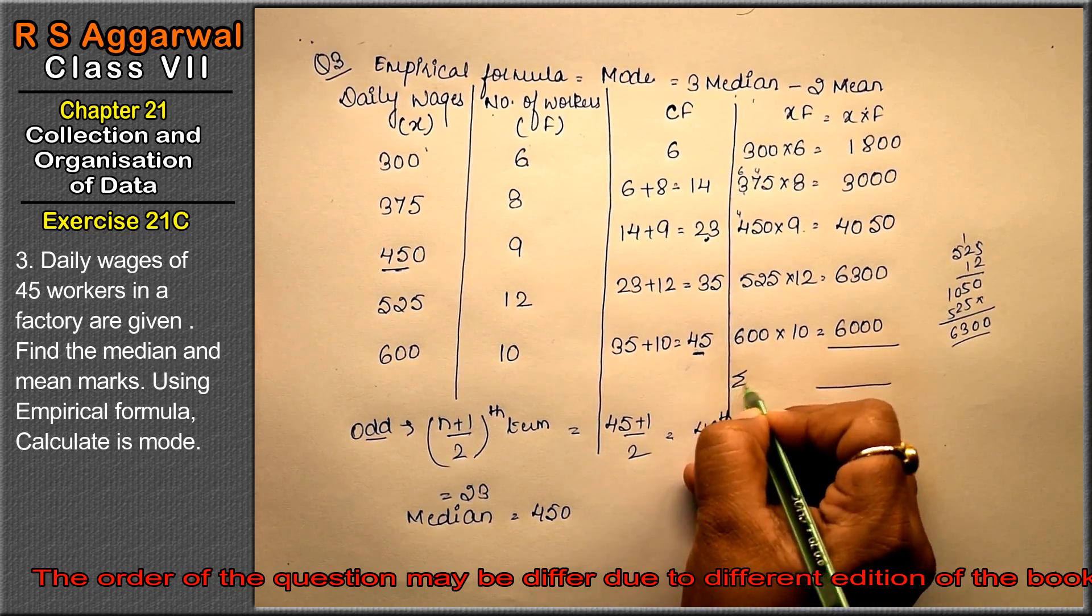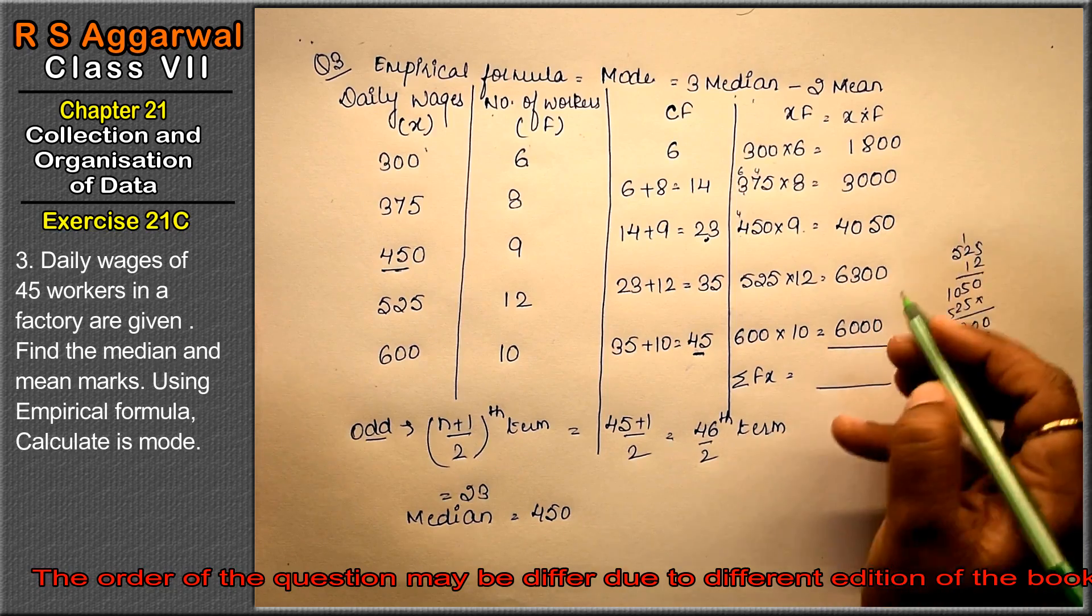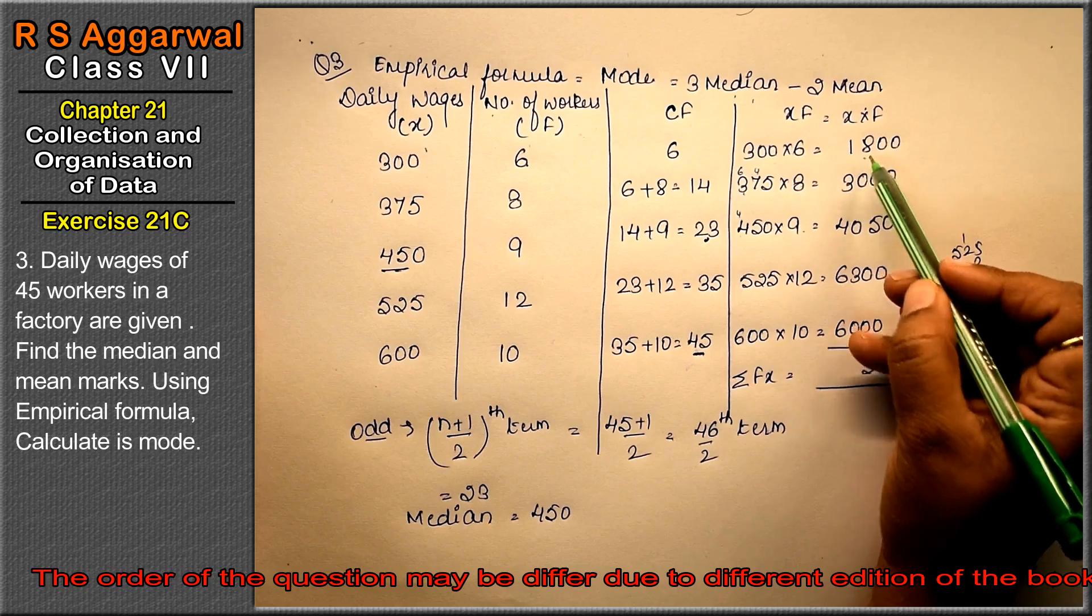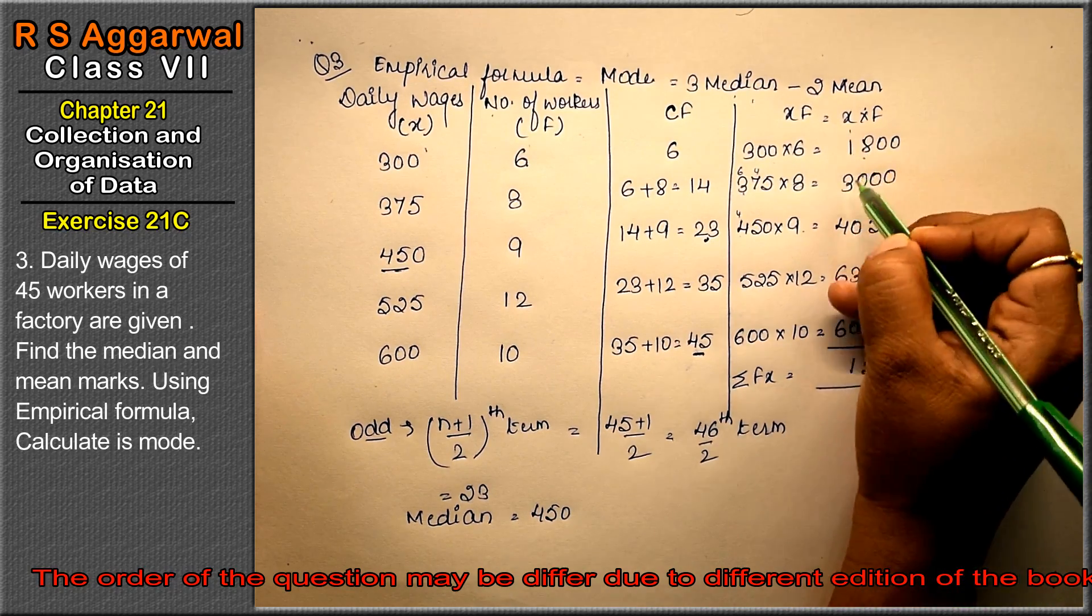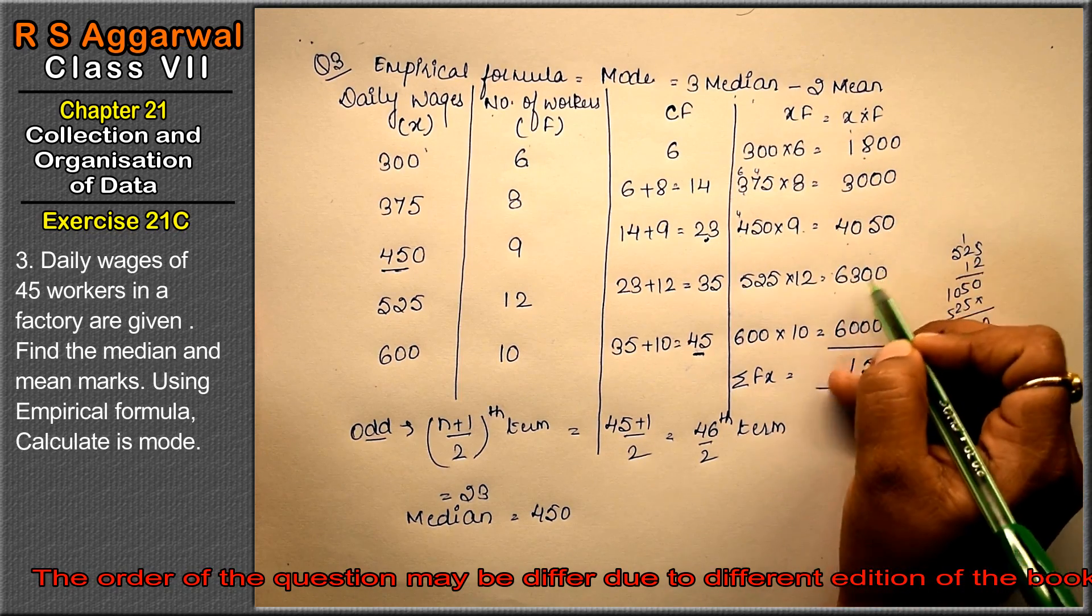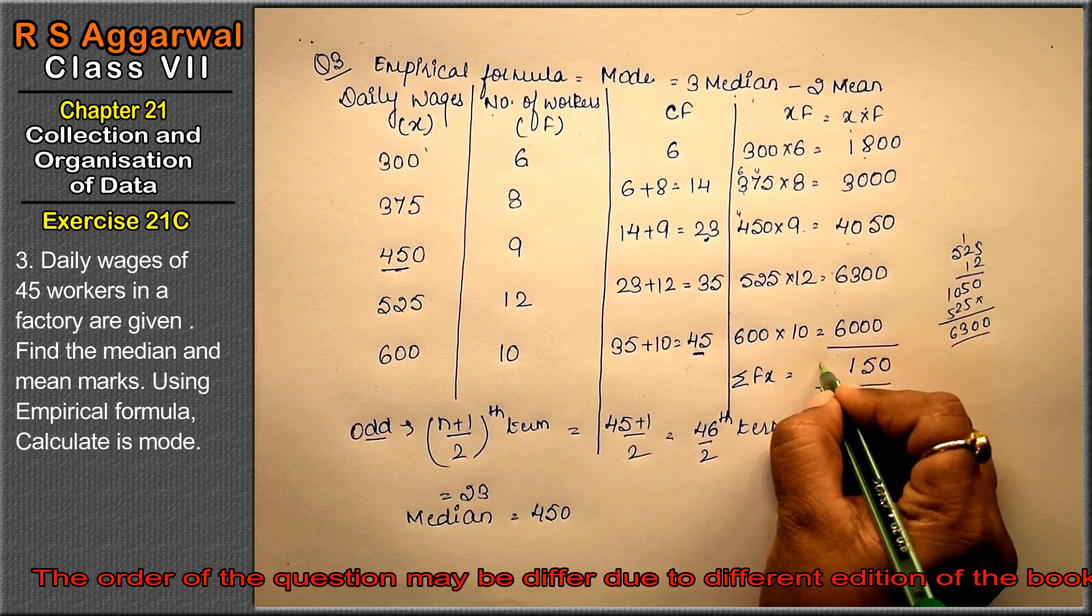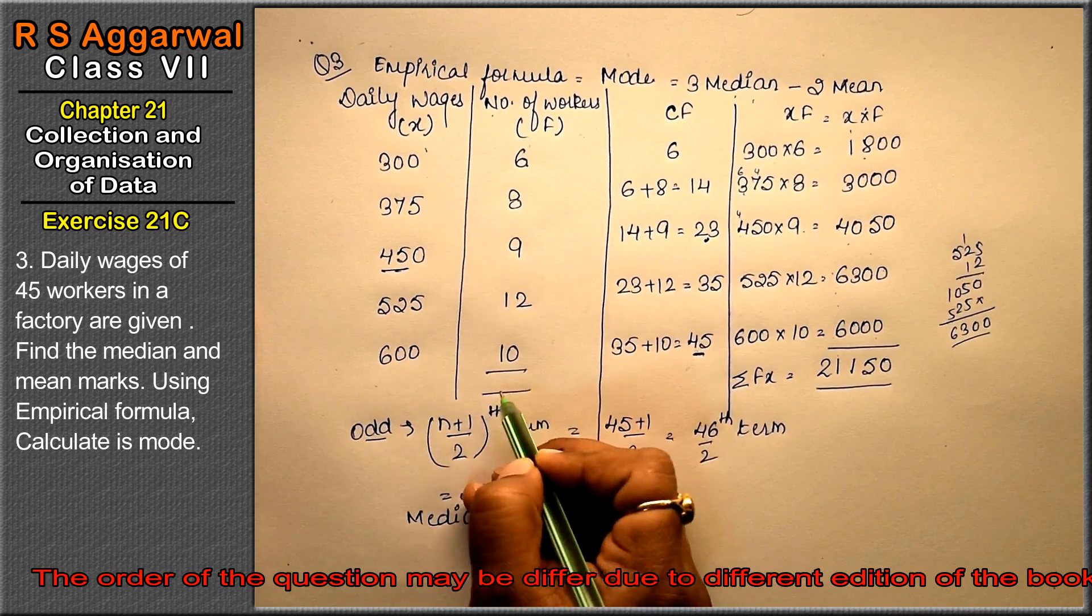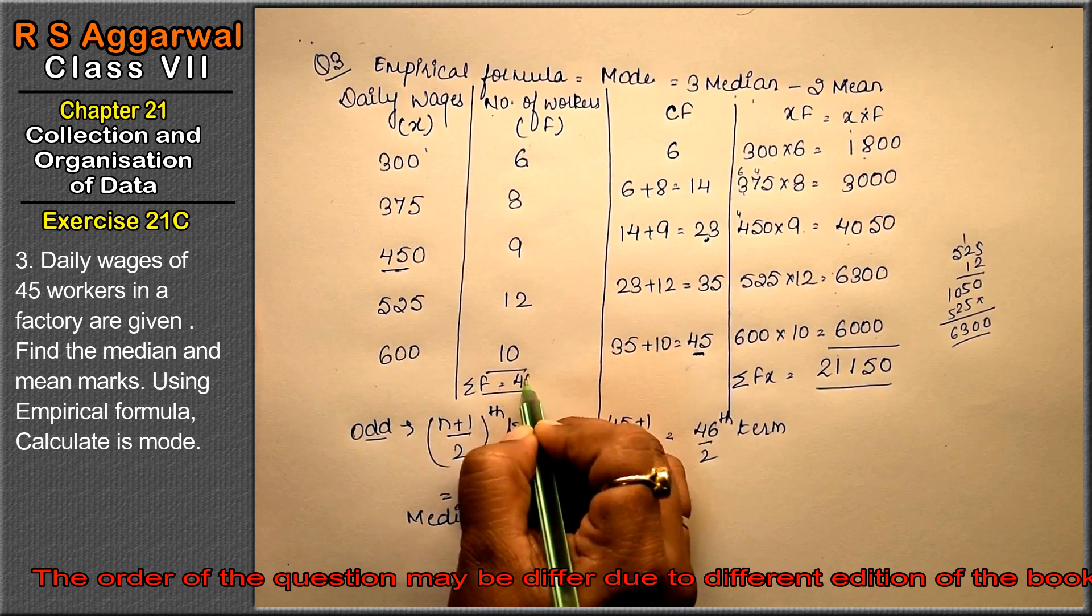Add it, so what will happen? Sigma fx: 0, 5 as it is, 8 and 3 is 11 carry 1, 2, 5, 6, 7, 8, 9, 10, 11, 12, 13, 14, 15, 16, 17, 18, 19, 20, 21. That's 21,150. And our sigma f, sigma f is the same as this, that is sigma f equals 45.